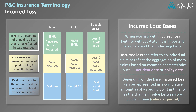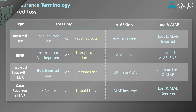Let's end this discussion with a review of the various naming conventions for the components we've discussed so far. Incurred loss that does not include IBNR is more precisely called case incurred loss, or alternatively, reported loss. IBNR, which stands for incurred but not reported, is sometimes called unreported loss. In this context, the terms reported and unreported refer to whether the insurer has reported losses in the form of paid losses or case reserves. The terms reported or unreported should not be interpreted to mean that claims have or have not been reported to the insurer.